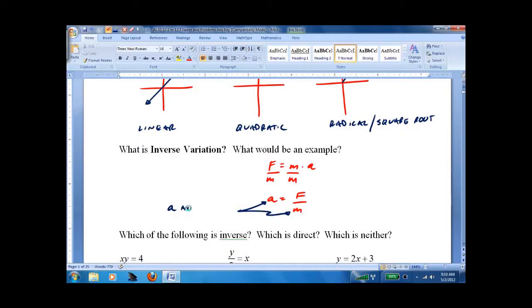We would be able to say Acceleration and Mass have inverse variation. The reason we do that is one is on top of the fraction, one's on the bottom, with an equal sign in between.